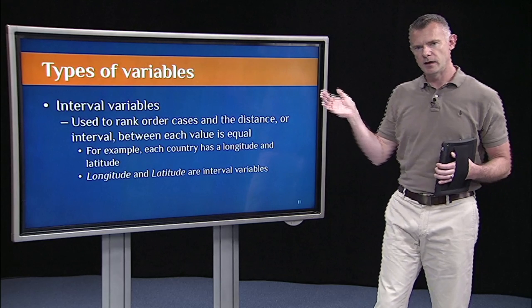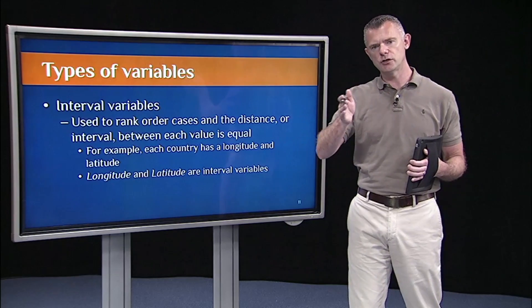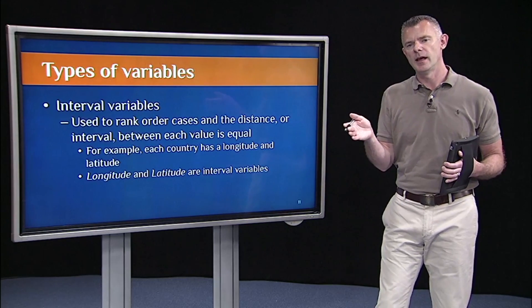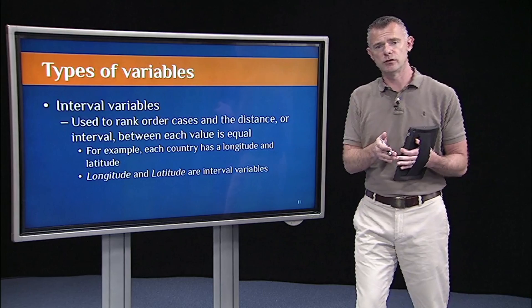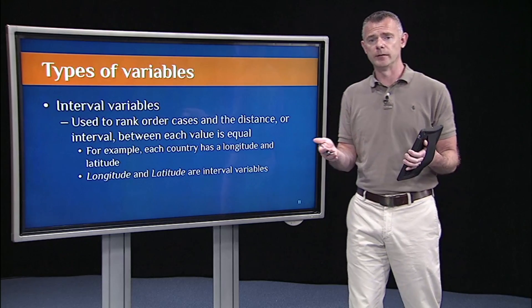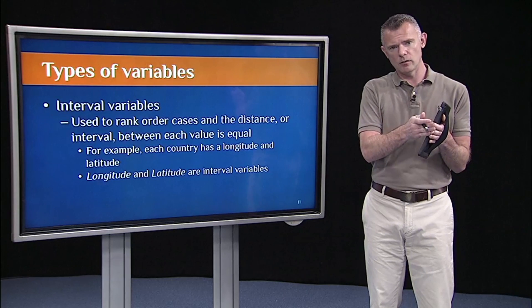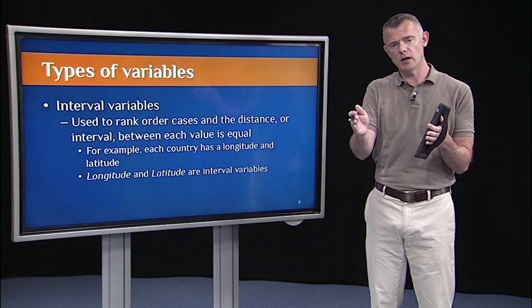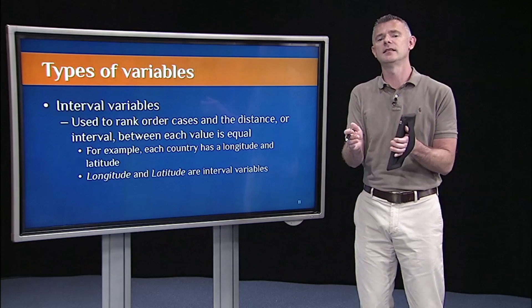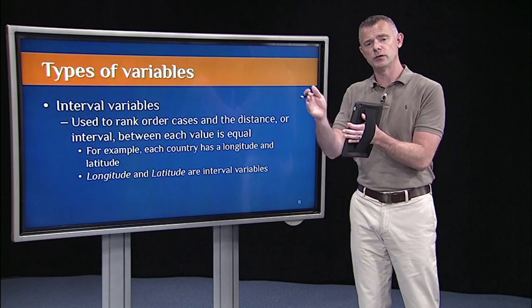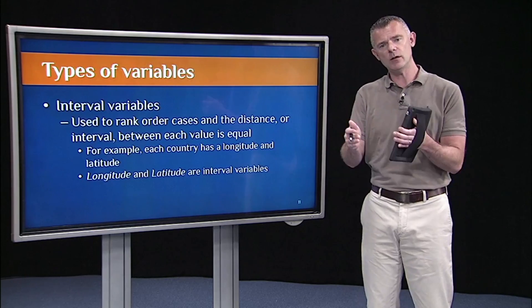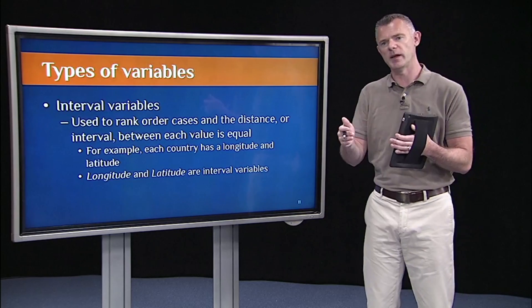each country, if we look at the globe, has a longitude and a latitude. I can compare the longitude and latitude of each country. The distance from, say, zero longitude to 100 longitude is the same as the distance from 100 longitude to 200 longitude. They're equal intervals. They're equal spaces.